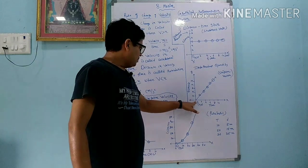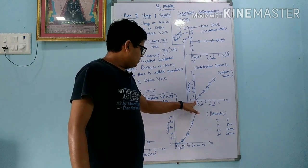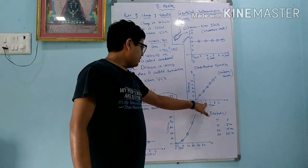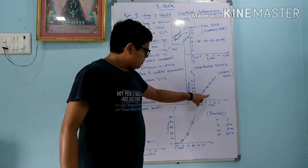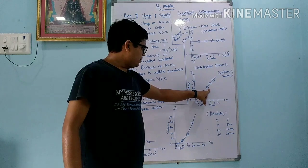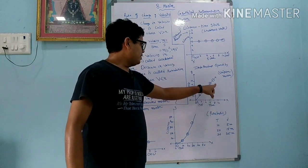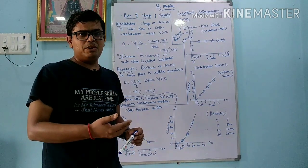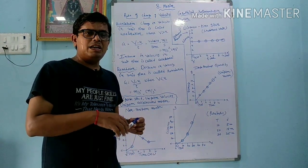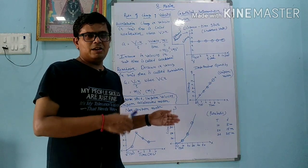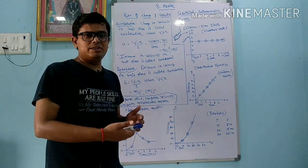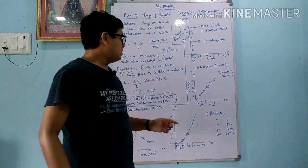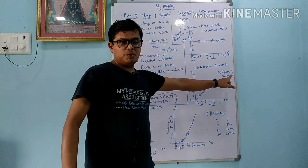The second distance versus time graph: at zero time I cover zero distance, at 2 seconds I cover 2 meters, at 4 seconds I cover 4 meters, at 6 seconds I cover 6 meters, at 8 seconds I cover 8 meters, and at 10 seconds I cover 10 meters. In equal time I cover equal distance, so whenever you get this type of linear line, you can say it is uniform motion.